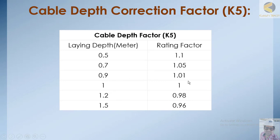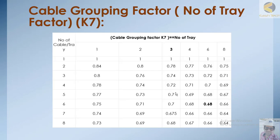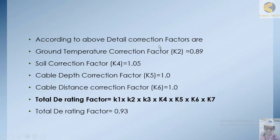Based on the cable depth we select the depth correction factor, and based on the distance between cables we select the cable spacing correction factor. Since we have no cable grouping — only one cable — we use a factor of 1. According to all the above data, the correction factors are: ground temperature correction factor K2 = 0.89, soil correction factor = 1.05, cable depth correction factor = 1, cable distance correction factor = 1, giving a total derating factor of 0.93.